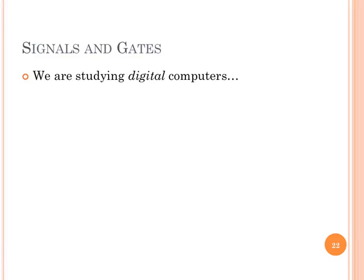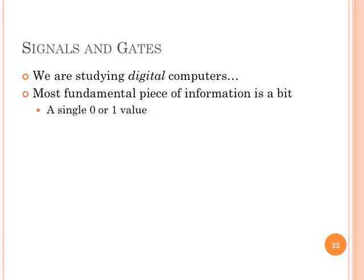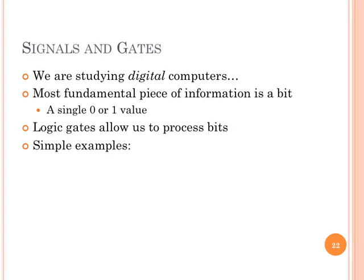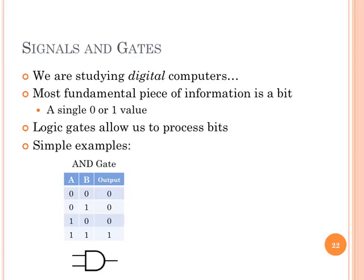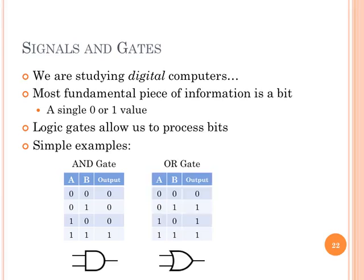We are studying digital computers, which means we have zeros and ones everywhere — this is certainly not the only way to represent information. We have logic gates that allow us to process this information. AND gates produce a one when all their inputs are one; if any input is zero, we produce a zero. OR gates produce a one if any of the inputs are one. NOT gates take one input and output the opposite: you say yes, I say no; you say no, I say yes.